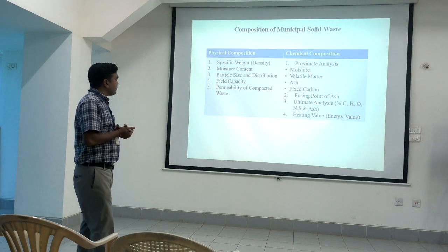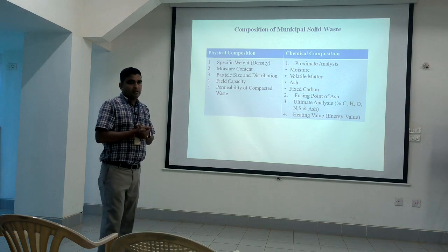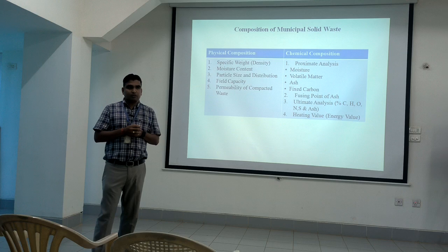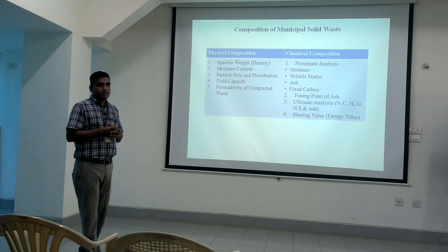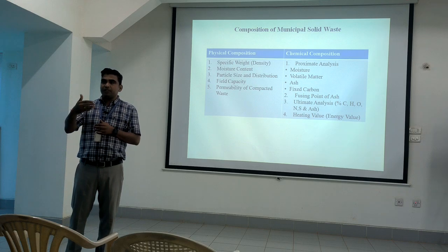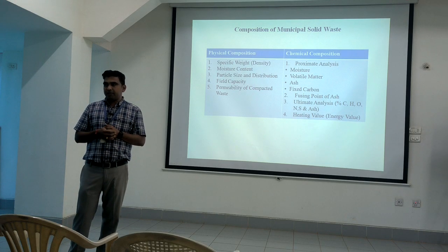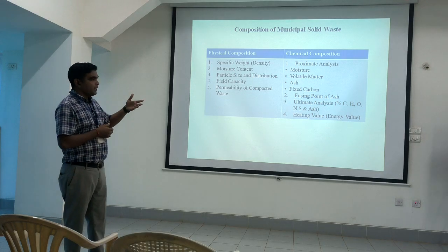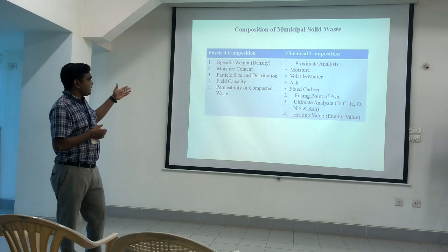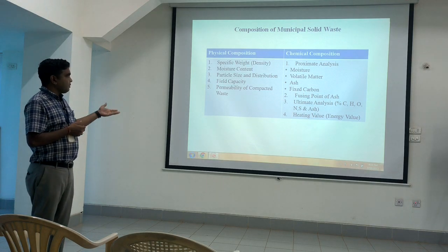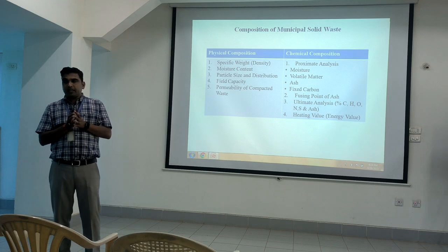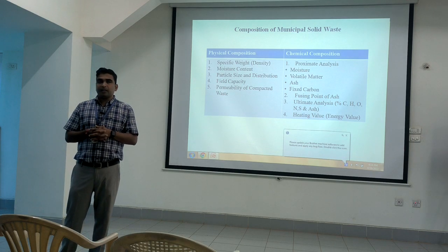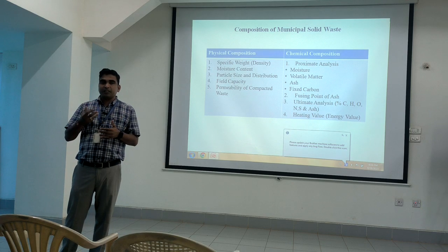In the composition section, when solid waste is collected, we look at physical and chemical composition. It is necessary to understand the composition to decide which disposal method is suitable. Physical properties include specific weight, moisture content, particle size distribution, field capacity, and permeability of compacted waste. These parameters help calculate volume requirements, vehicle requirements, and the area of the dumping yard.